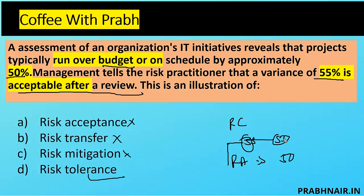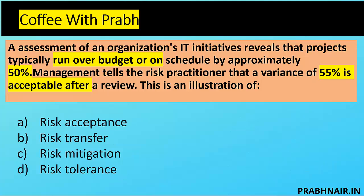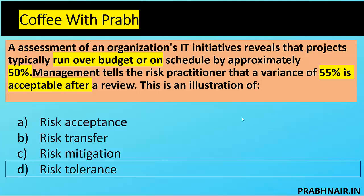The tolerance is increased from 50% to 55%, and based on that management takes a decision. Always remember: as senior management, look at the tolerance level — if tolerance exceeds capacity, avoid; the primary objective is to implement controls to bring tolerance below appetite, and whatever risk is left after that, accept. In this case they're talking about a variation in tolerance level. The answer is D — risk tolerance.